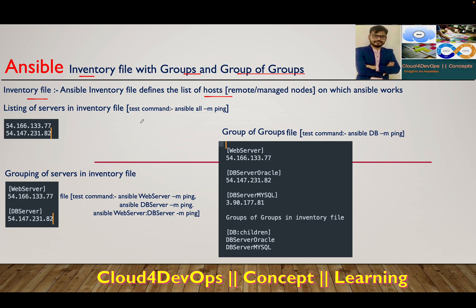Coming back to the main agenda: groups. Why do we need groups? For example, let's say we have 500 servers in an environment. All 500 are divided into database servers, application servers, and web servers. Within database we have MySQL, Oracle, Microsoft SQL — all different, performing different functionality. If I have to do a deployment on the application server only, I can use Ansible to create multiple groups.